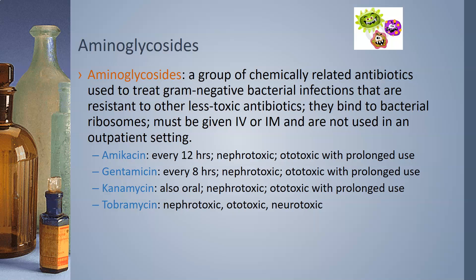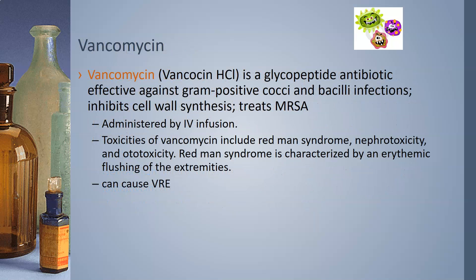Aminoglycosides bind to bacterial ribosomes and must be given IV or IM — they are not used in outpatient settings. Amikacin is given every 12 hours and is nephrotoxic and ototoxic with prolonged use. Gentamicin is given every 8 hours and is also nephrotoxic and ototoxic; neonates born to group B strep-positive mothers may receive it, but ototoxicity can cause deafness. Kanamycin has an oral version but is typically given IV or IM, with nephrotoxicity and ototoxicity. Tobramycin is nephrotoxic, ototoxic, and neurotoxic.